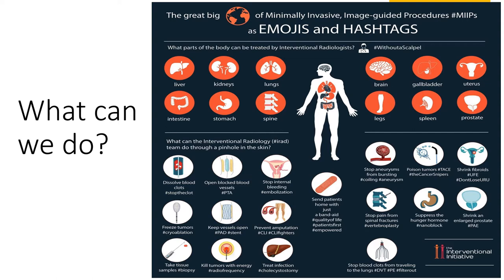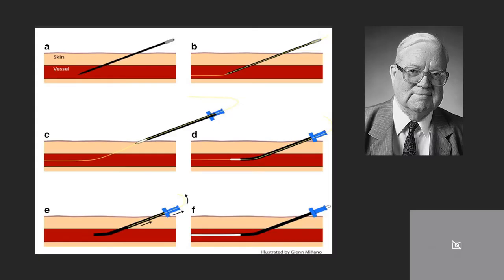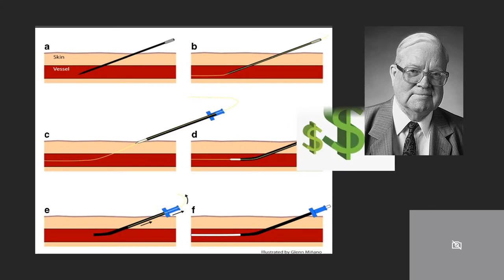This diagram lists some of the simple things we can do. Much of what we do is based off this classic technique, the Seldinger technique, invented by Dr. Silvan Ivar Seldinger, in which we use a needle to access an area. We use a small wire to keep that area for access and then insert a sheath, which allows us to use a variety of different tools for a procedure. Final step — success.